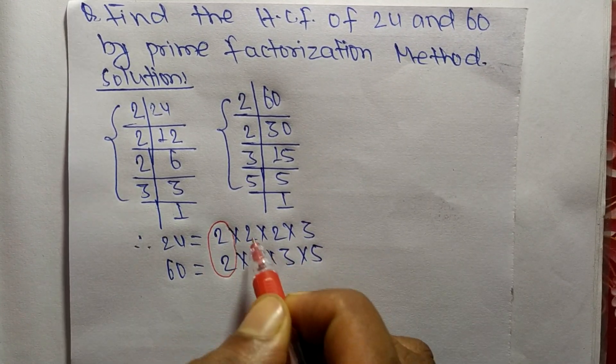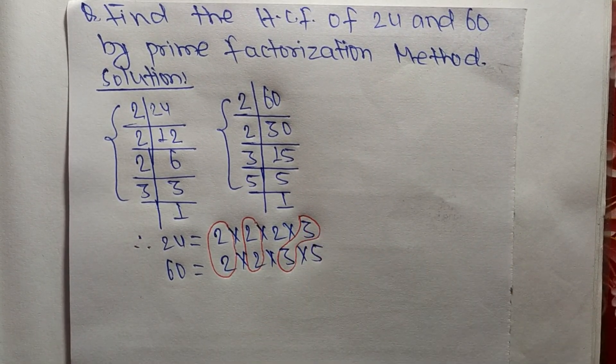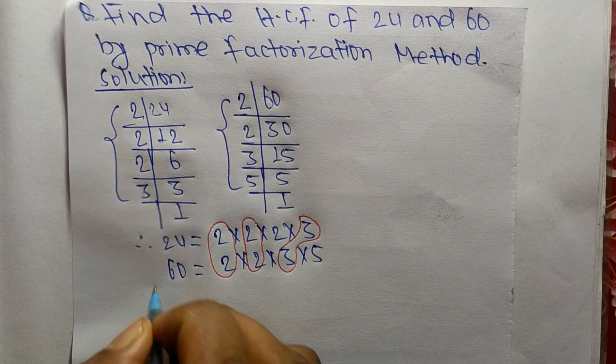The first common factor is 2, the second common is also 2, and the third one is 3.